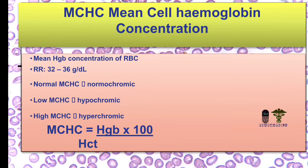The next RBC index is MCHC — mean cell hemoglobin concentration. This is the mean hemoglobin concentration of the RBC, with a reference range of 32 to 36. Normal MCHC is called normochromic because the mean cell hemoglobin concentration is within the normal range. Hemoglobin is a color pigment, so 'chromic' indicates the color of the RBC. Low MCHC means hypochromic and high MCHC means hyperchromic. The formula to calculate MCHC value is also provided.